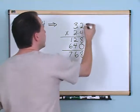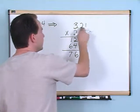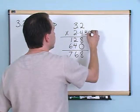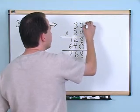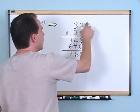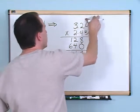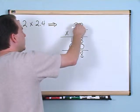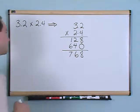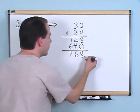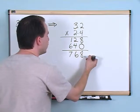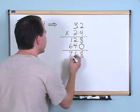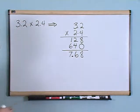All you do when you're done with the multiplication is look at the original problem and count how many digits are after the decimal points. Here there's 1 digit after the decimal in 3.2 and 1 in 2.4, giving us 2 total. If there were additional digits after the decimal points you'd count those as well, but in this case we just have 2.